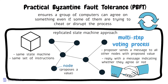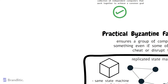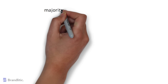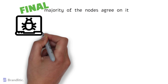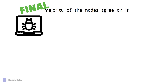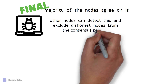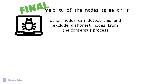PBFT ensures that a decision is made only when a majority of nodes agree on it, and that this decision is final and cannot be changed. If a node behaves maliciously, the other nodes can detect this and exclude the dishonest node from the consensus process.